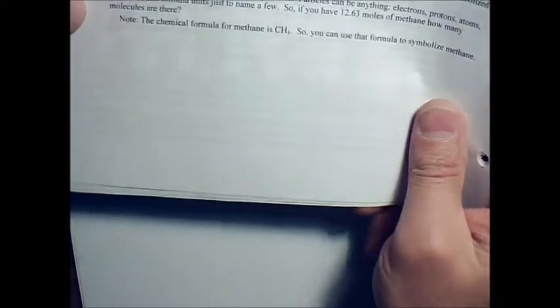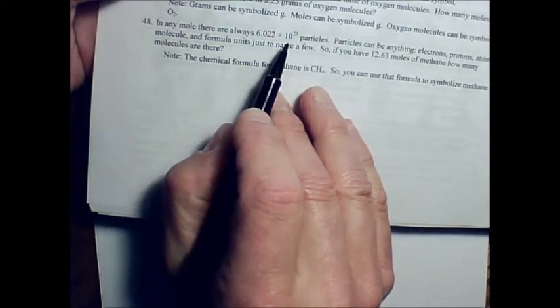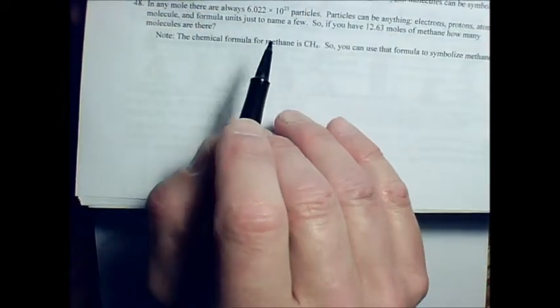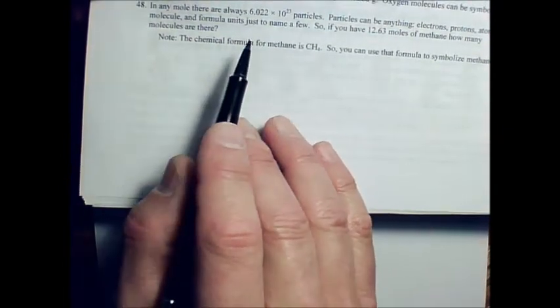Okay, so I've been asked to solve problem number 48 in your unit 1 handout. In this version it's on page 35. The particular question being asked is: in any mole there are always 6.022 times 10 to the 23rd particles - that's Avogadro's number. Particles could be anything: electrons, protons, atoms, molecules, formula units. If you have 12.63 moles of methane, how many molecules are there?